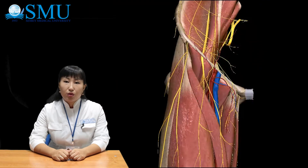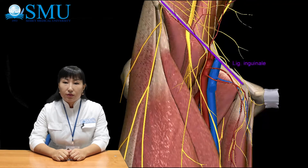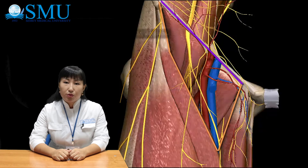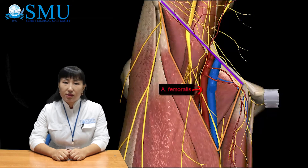Next let's talk about the borders of the femoral triangle. The superior border is the inguinal ligament, the lateral border is the sartorius muscle, and the medial border is the adductor longus. Posteriorly we have the iliopsoas and pectineus muscles. The femoral triangle contains the following neurovascular bundles: femoral artery, femoral vein, and femoral nerve.